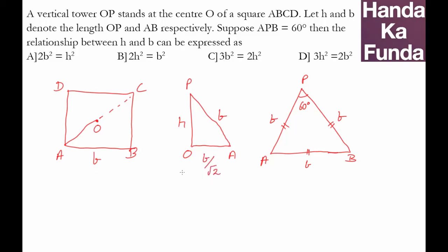And this is a right angle triangle OPA, so this by Pythagoras will give me H square plus B by root 2 whole square, or B square by 2, will be equal to hypotenuse square which is B square. So that essentially gives me H square is B square minus B square by 2, or B square by 2.